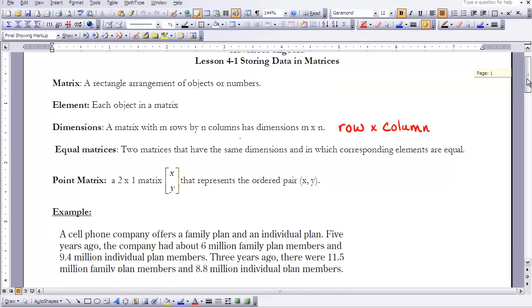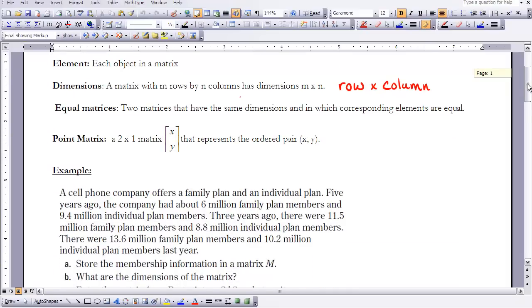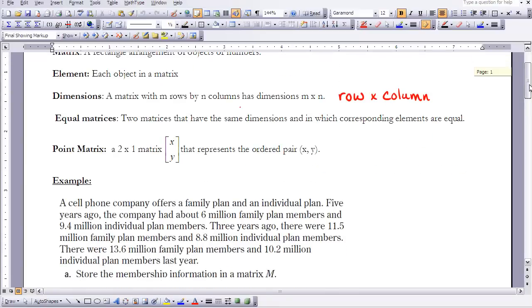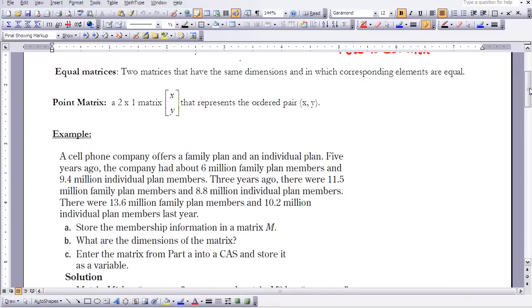I'm going to only show you the problem part itself, and then we'll have you plug the data in to your matrix here. So a cell phone company offers a family plan and an individual plan. Five years ago, the company had about six million family members, six million family plan, and 9.4 individual plans. Three years ago there were 11.5 million family members, 8.8 million individuals, and there were 13.6 family members and 10.2 million individual members last year.